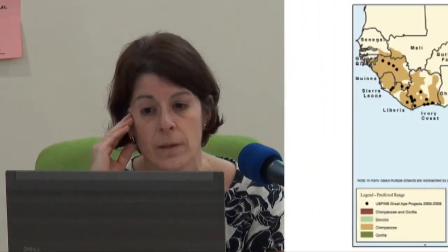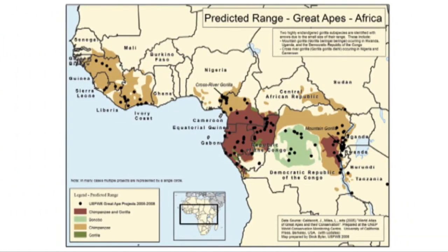This is a map of the distribution of apes. The pink colour is chimpanzees and gorillas, the pale green is bonobos, the pale brown is just chimpanzees, and the dark green is just gorillas.